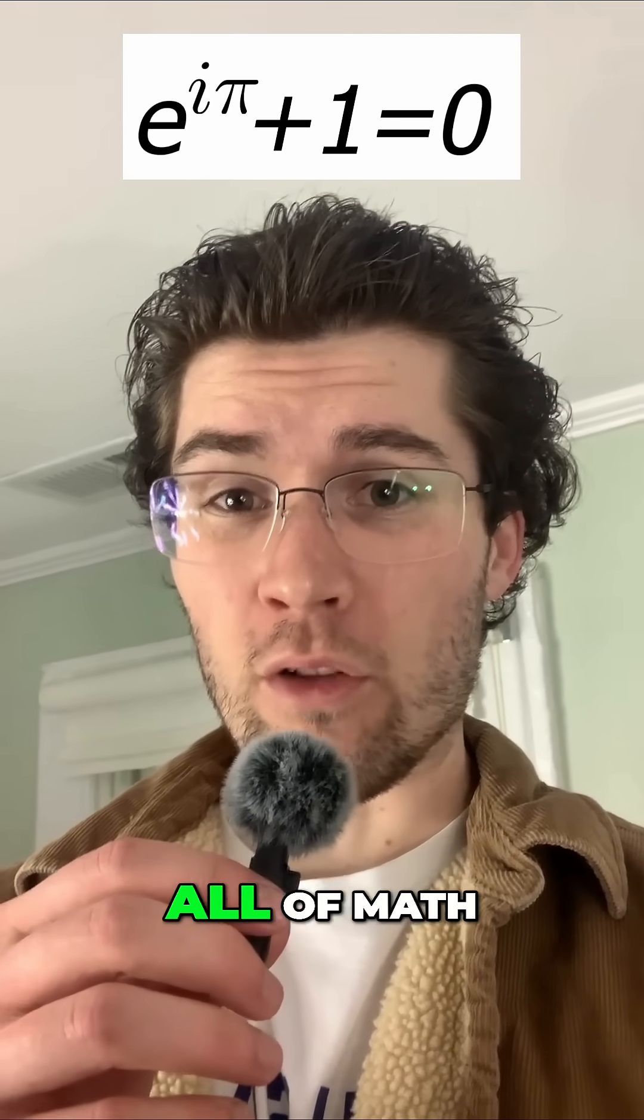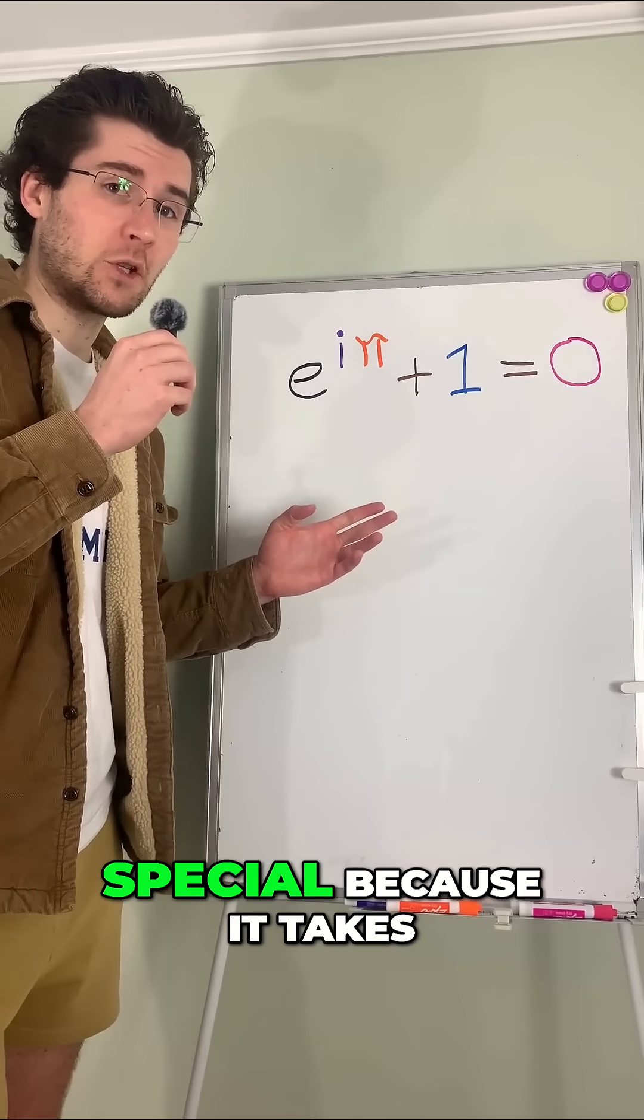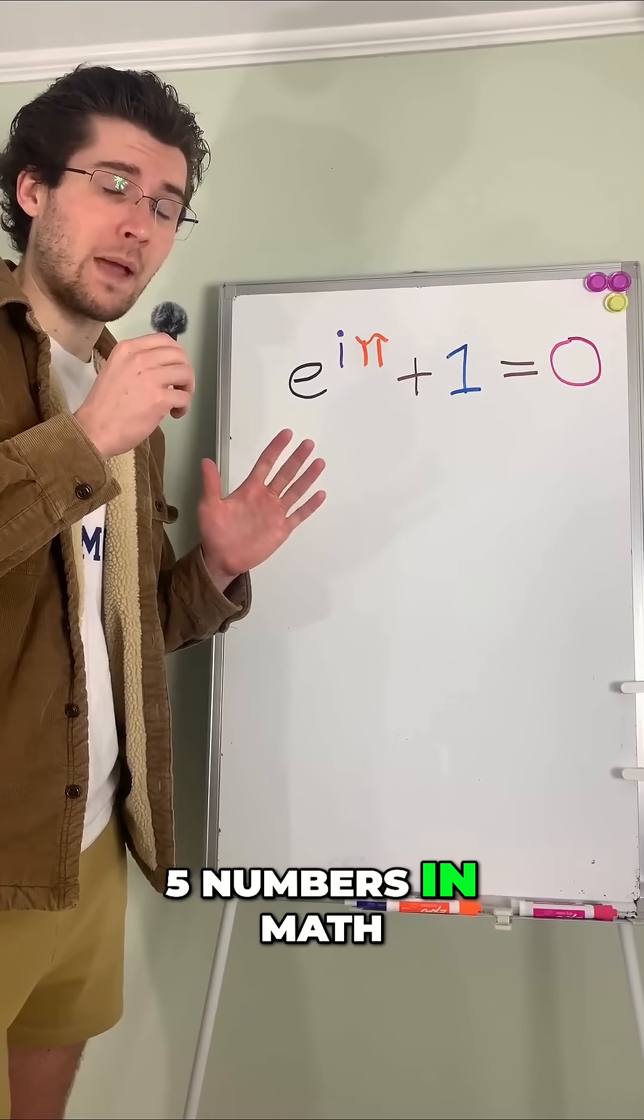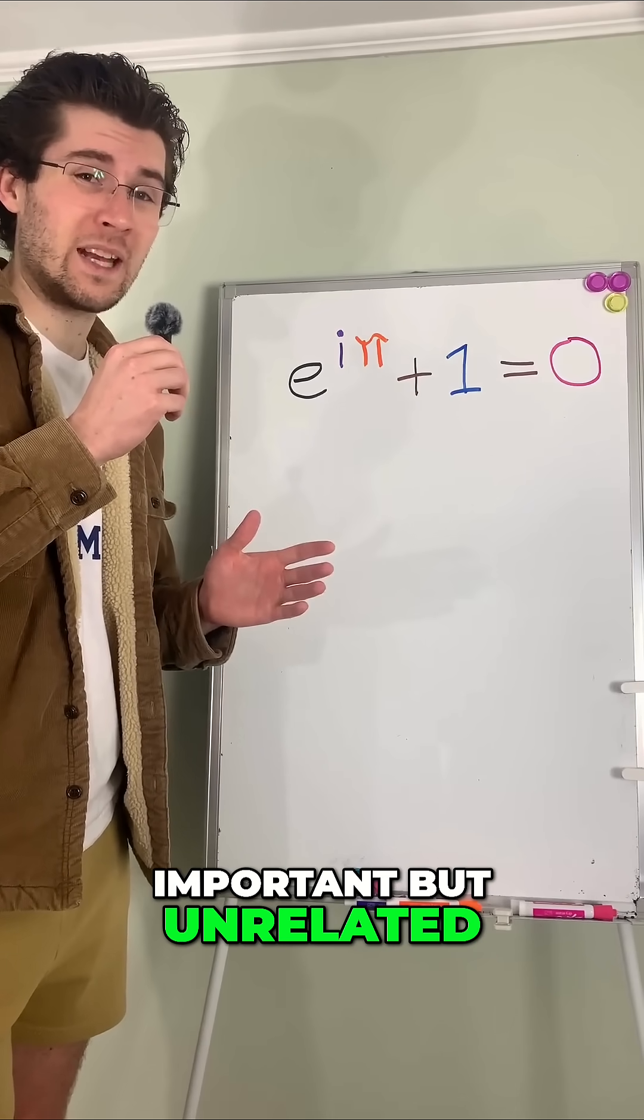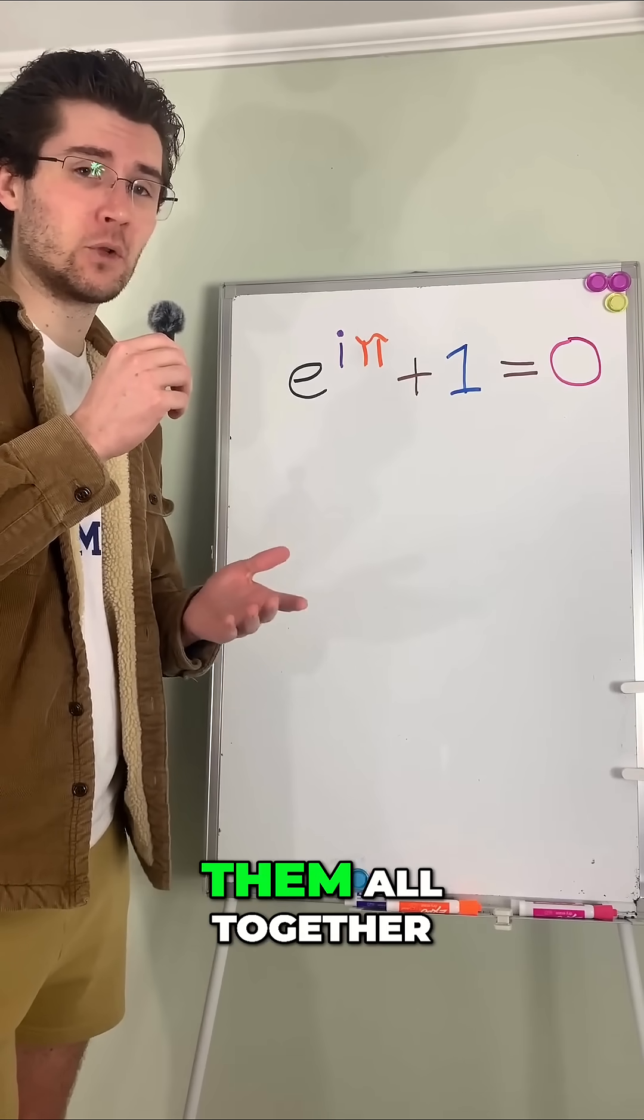This is called the most beautiful equation in all of math. This equation is so special because it takes five numbers in math that are all extremely important, but unrelated, and somehow it links them all together.